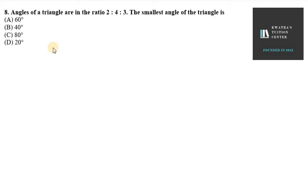Hello everyone, let's start with question number 8. It says angles of a triangle are in the ratio 2, ratio 4, ratio 3. The smallest angle of the triangle is. So, what do you first do?